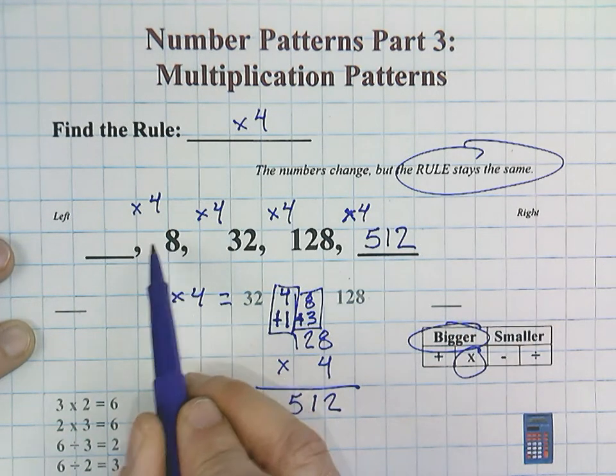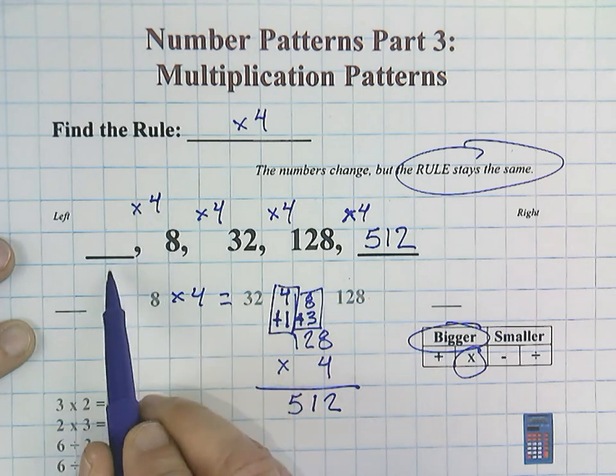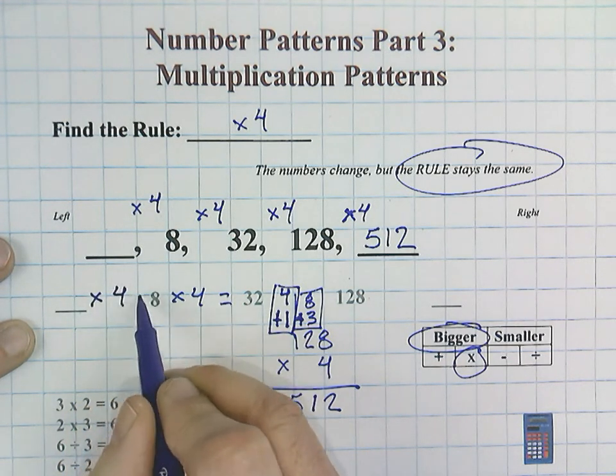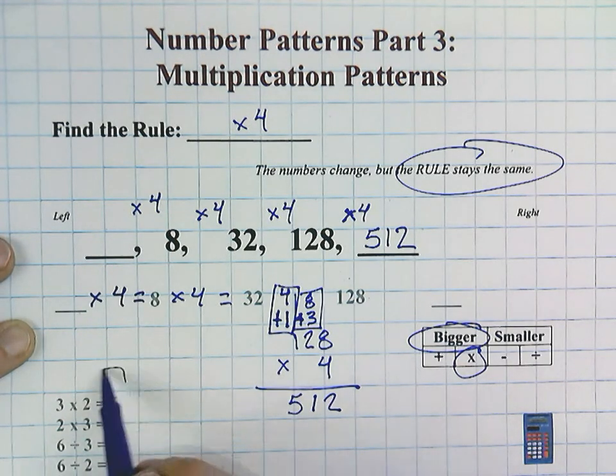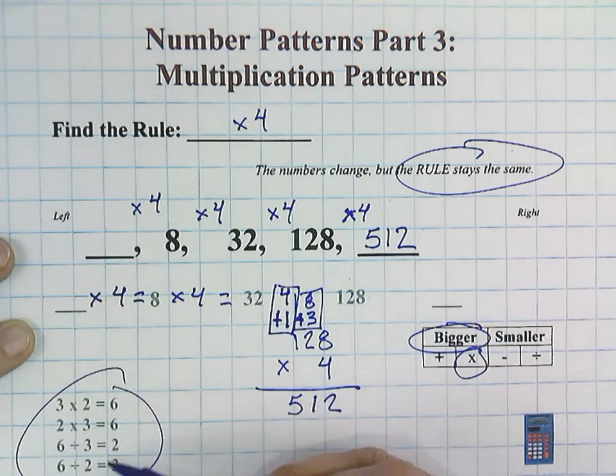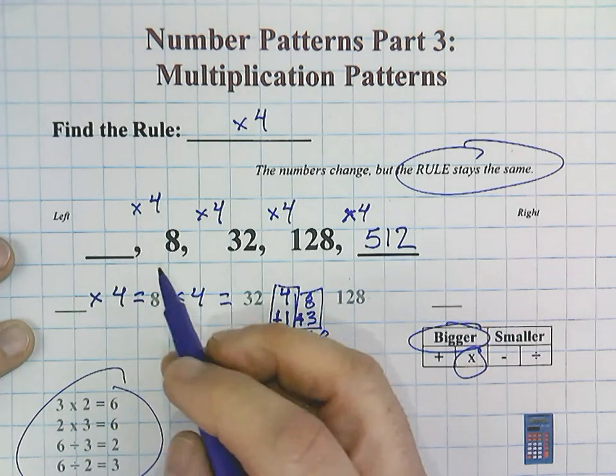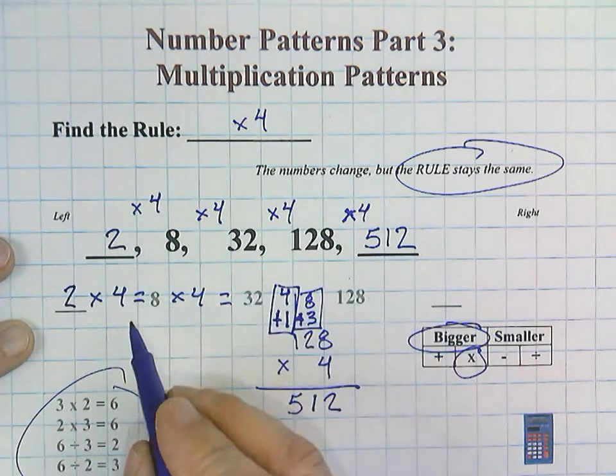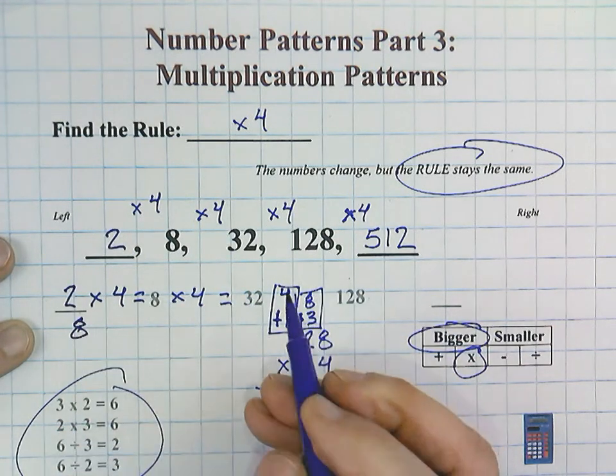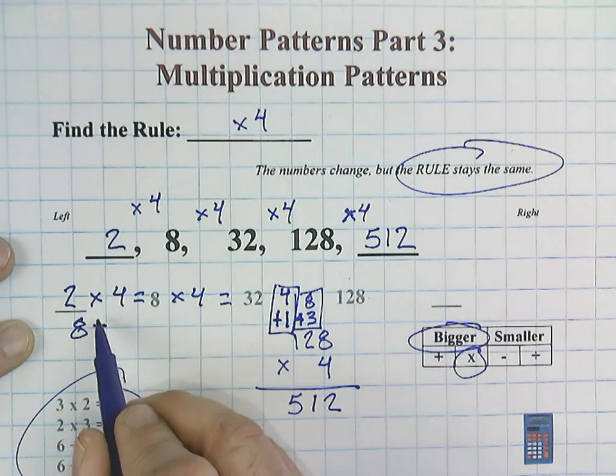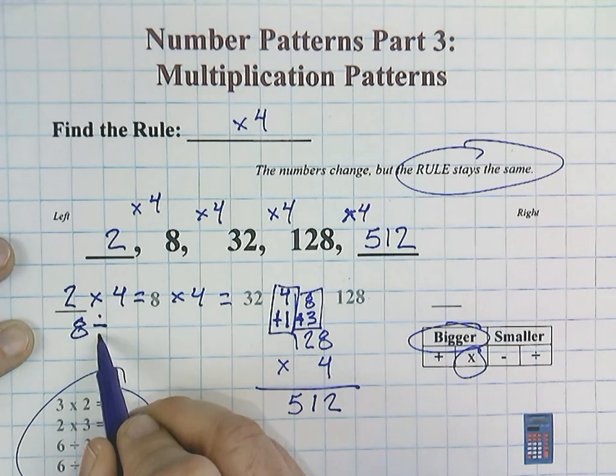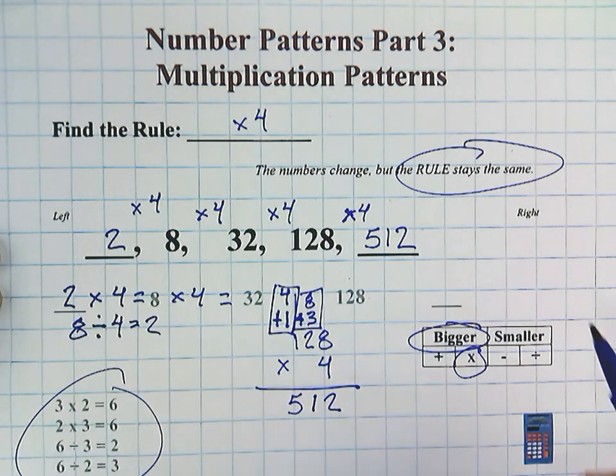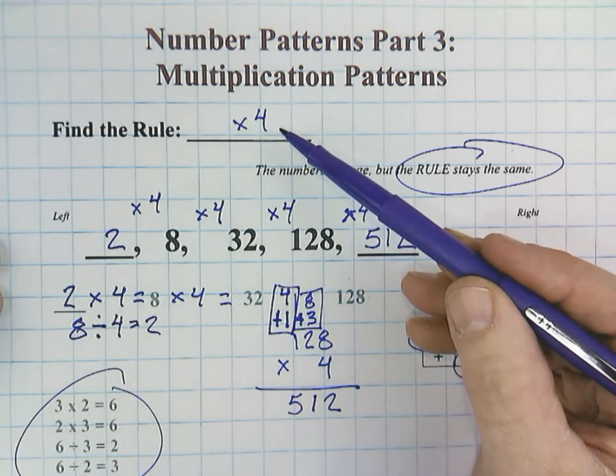Okay. We still have this one. The rule stays the same. In other words, it's going to be blank times 4 equals 8. You could use your knowledge of fact families. I just know that it's going to be 2. That's common knowledge that 2 times 4. But if you were struggling and you feel more comfortable using a division strategy, you could also show that as 8 divided by 4. And you would come up with 2.